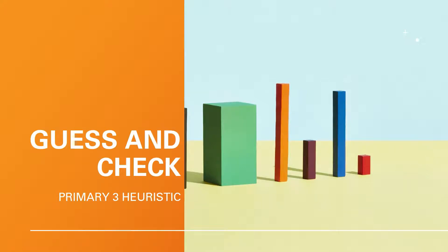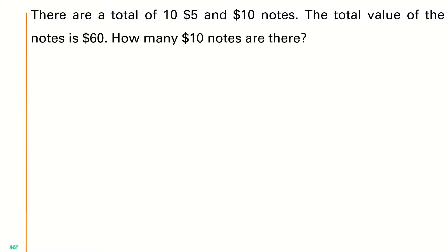Let's look at guess and check from primary tree heuristics. This is question 3. First, let's read the question.